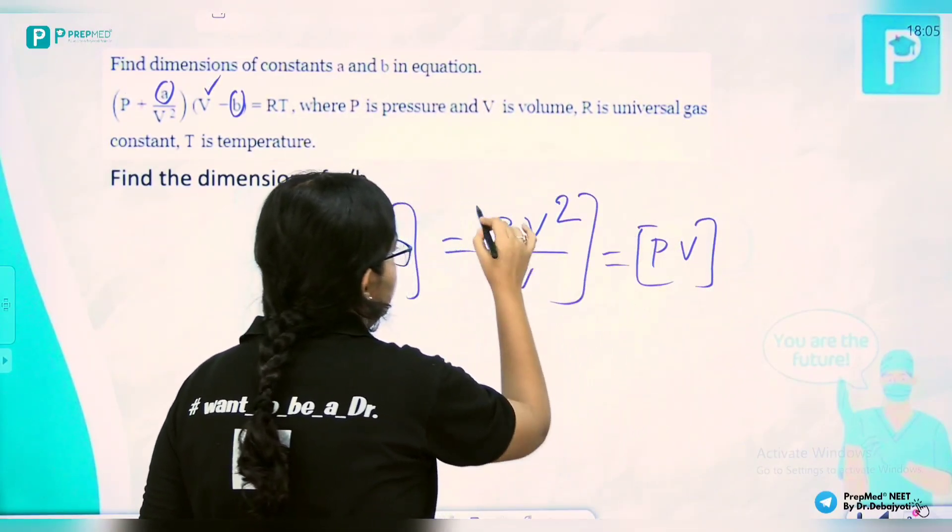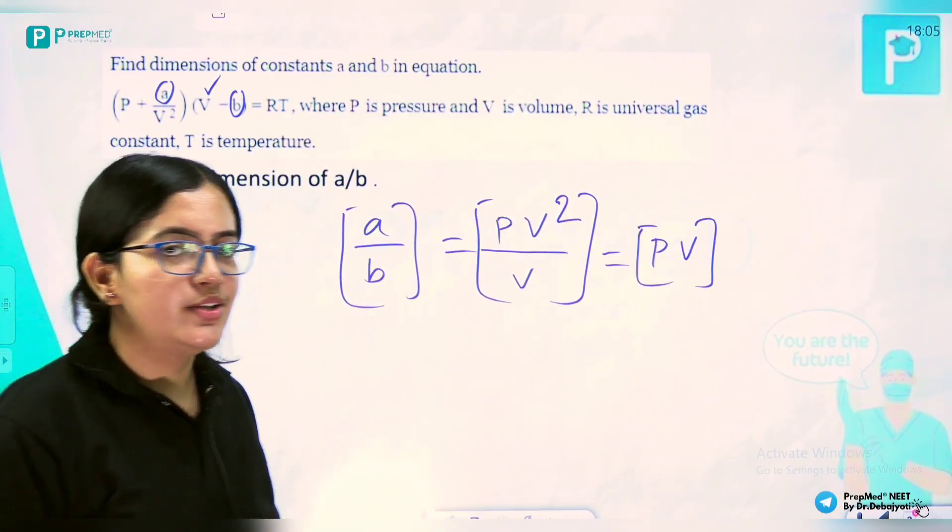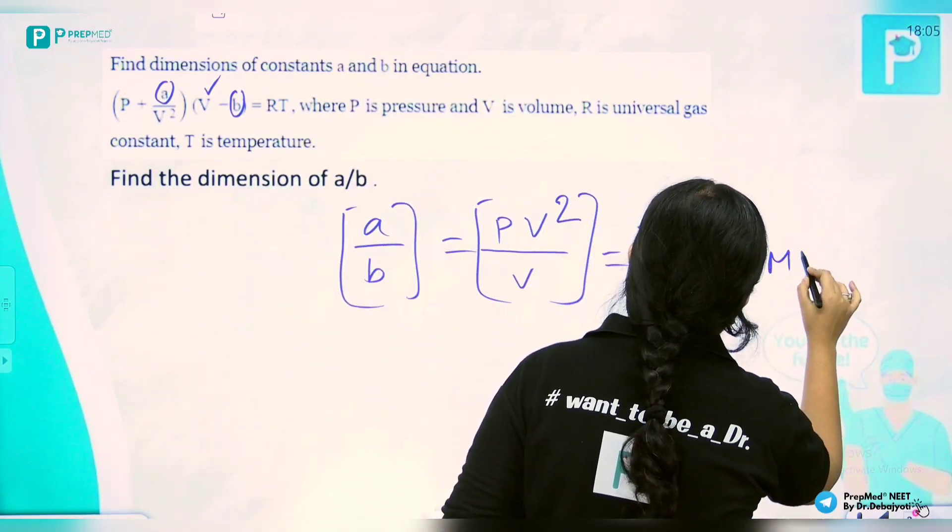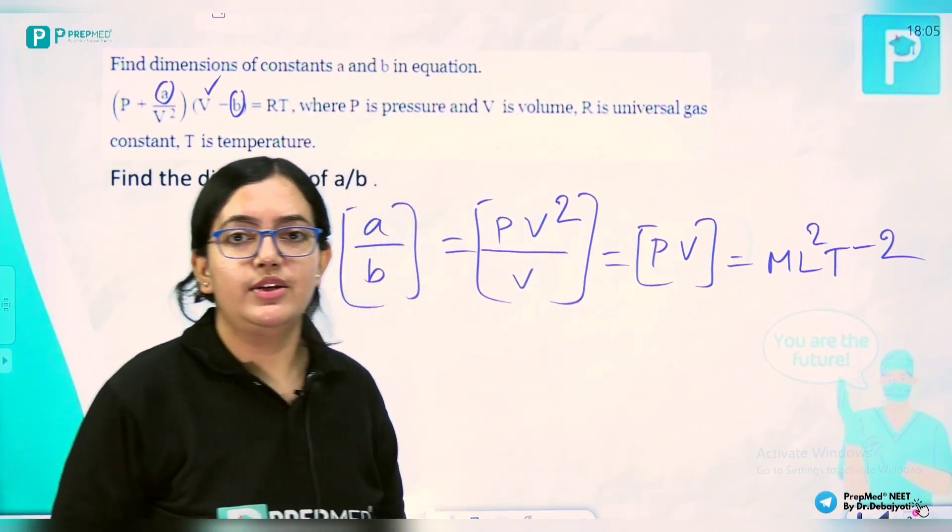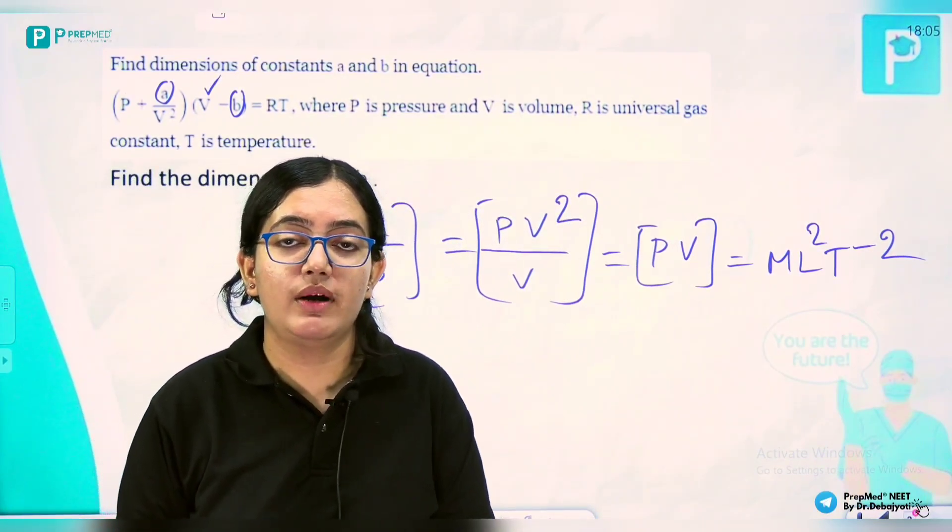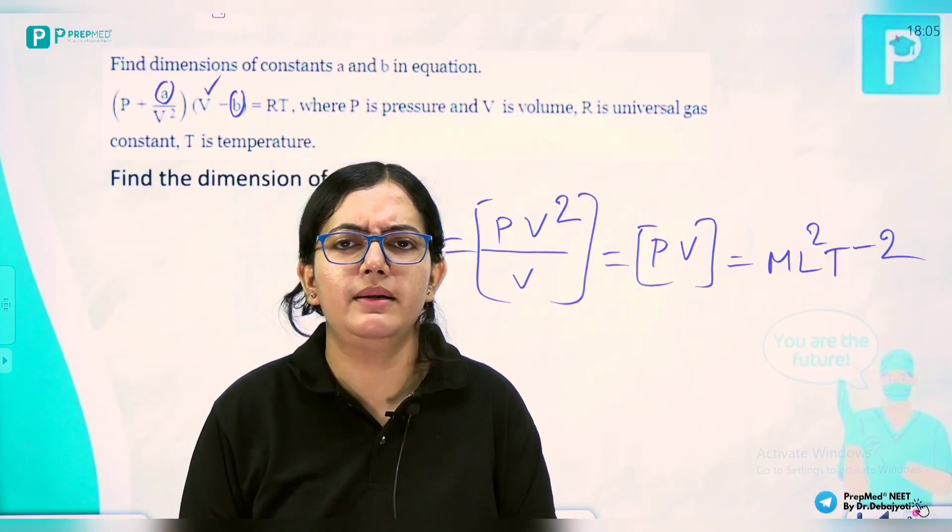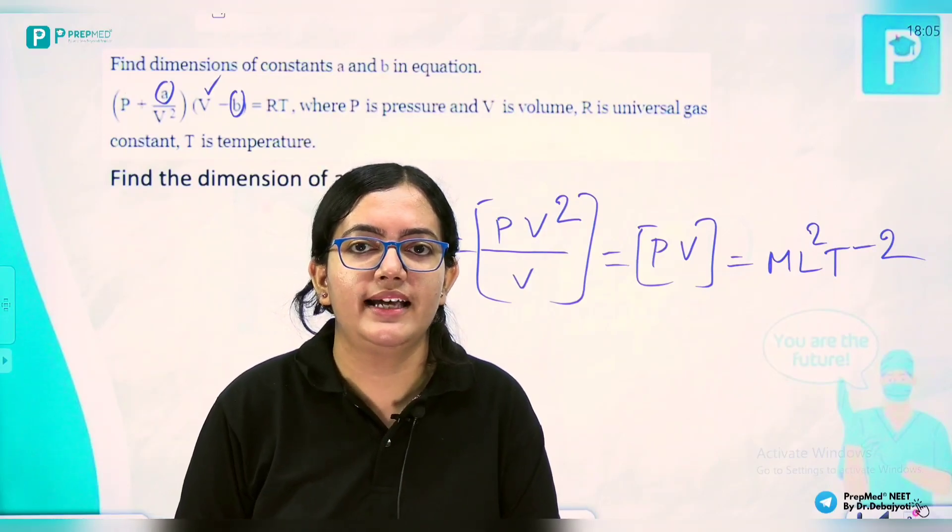so directly we place the value: ML²T^-2. You can apply this type of trick while calculating dimensions of ratios or products. This will be helpful for you. Thank you.